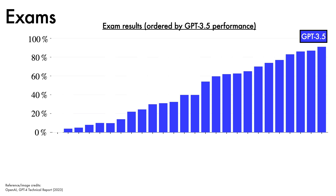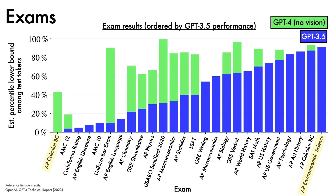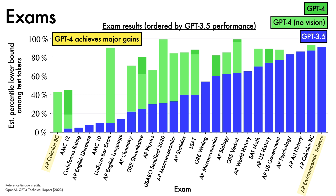Here are the GPT-3.5 exam results, ordered in increasing performance. On the y-axis we have the exam taken, ranging from those that GPT-3.5 was not able to make much progress on, like AP Calculus BC, up to those such as AP Environmental Science, where GPT-3.5 is already among the top percentiles of test takers. In light green, we can see how GPT-4 without image inputs improves these results, while in dark green, we see places where GPT-4 with image inputs does better still. For many topics, GPT-4 achieves major gains.